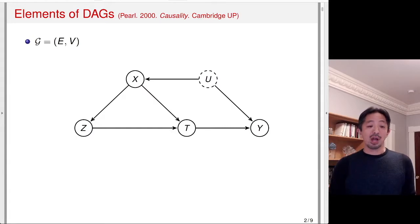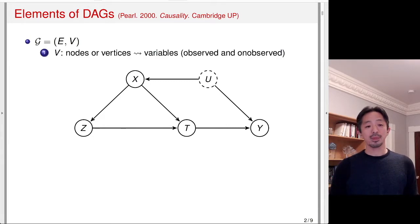Now DAGs are a graph. The graph usually consists of edges and vertices, E and V. V represents nodes or vertices. In the causal DAGs, they represent the variables. The observed variables are in the solid circles, so X, Z, T, and Y in this graph. The unobserved variables are indicated by the dashed circle, so U in this case is the unobserved variable. Each of these circles, the nodes, represent a particular variable.